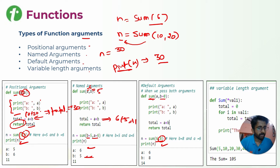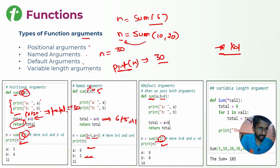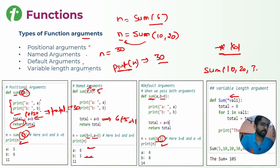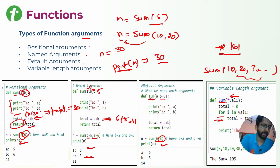The last type is variable-length arguments. Whenever you want to pass a different number of inputs, you can use a star (*) parameter, which accepts a variable number of inputs. So when calling sum with values 10, 20, 30, and so on, all these inputs are passed to the function, and you can apply a for loop to add them to a total and print the output.